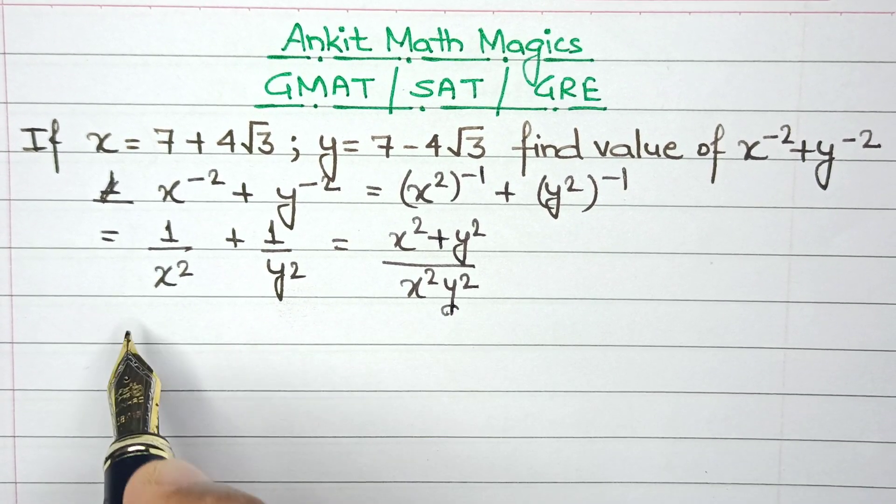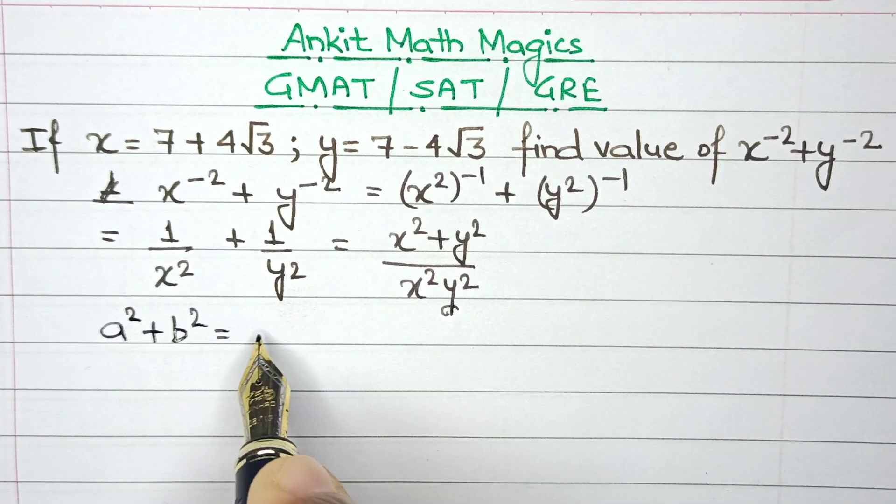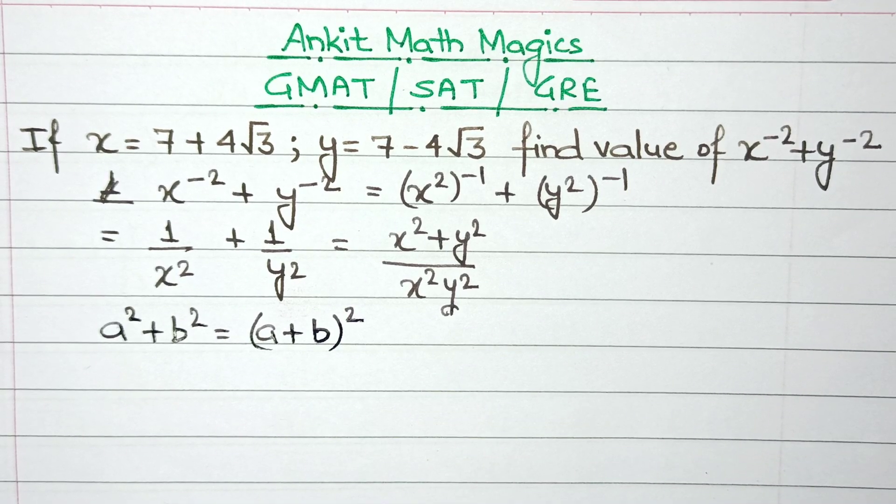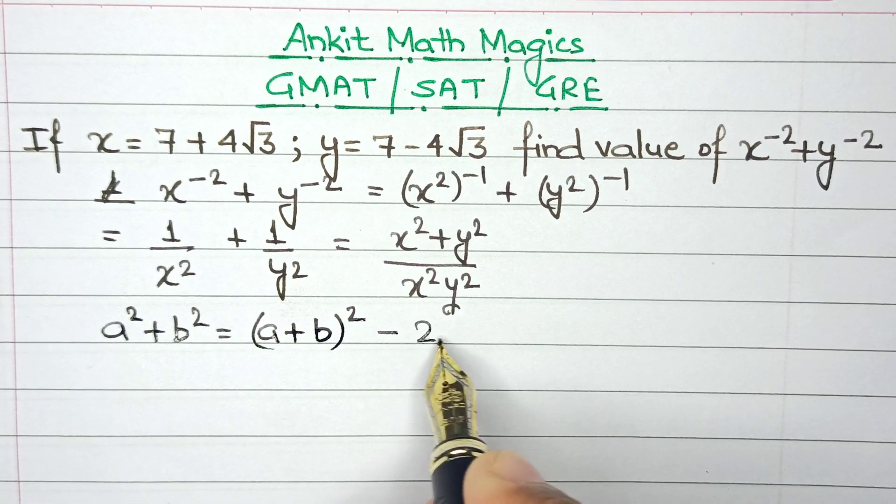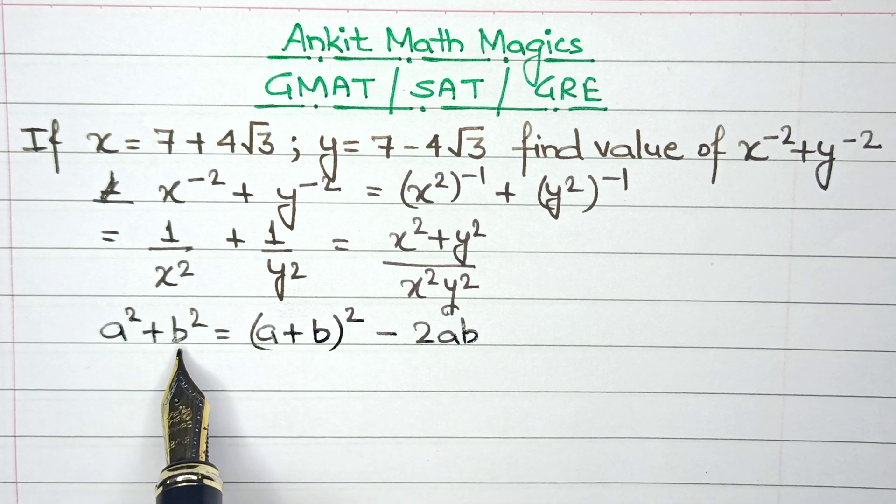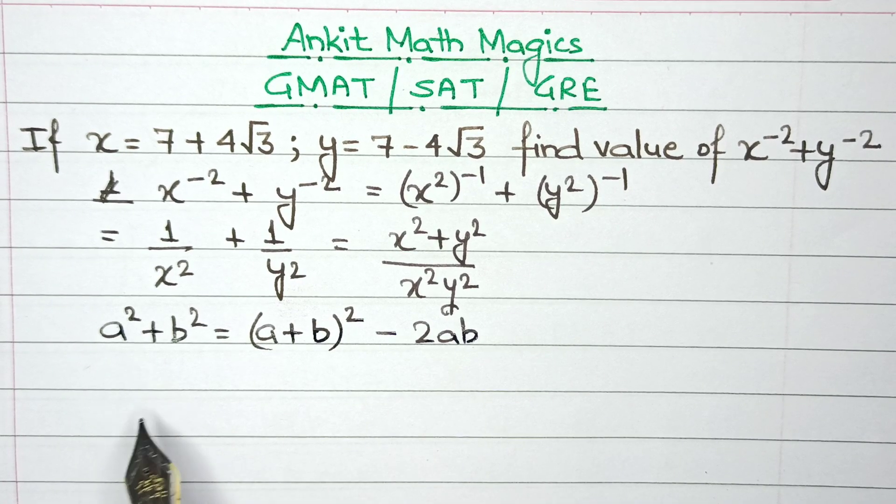Let's start with this: here we have the identity of a square plus b square, which is a plus b whole square minus 2ab. So this is a reverse identity that I have written of a square plus b square. Technically speaking, we have the identity of a plus b whole square and it's 2ab on this side.